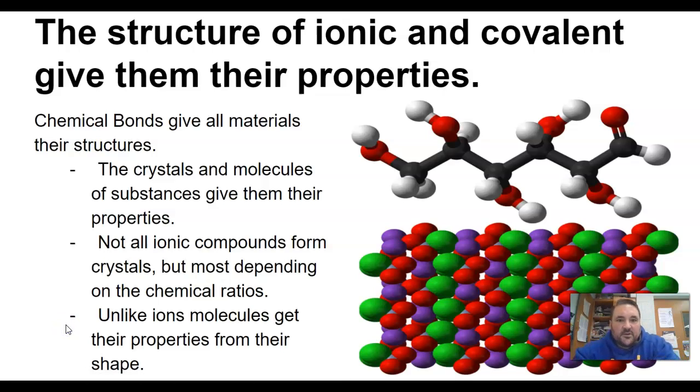The structure of ionic and covalent bonds gives them their properties. Chemical bonds, like crystals and molecules, are a little different. The substances, not all ionic compounds form crystals, but most do, and that's that rigid, fixed structure. But those crystals can separate, usually by ions in water. It's called dissociation, where covalent bonds are much stronger. They hold together in water, and they tend to not separate.